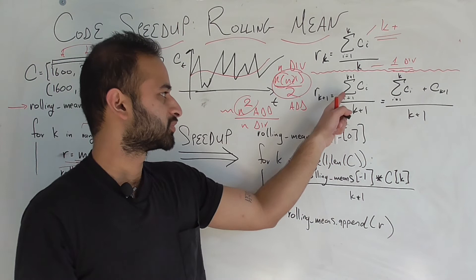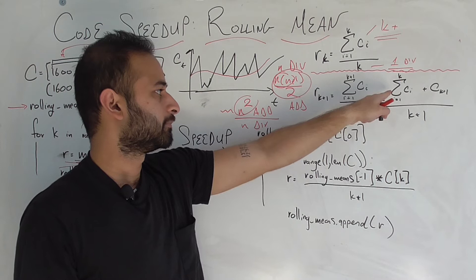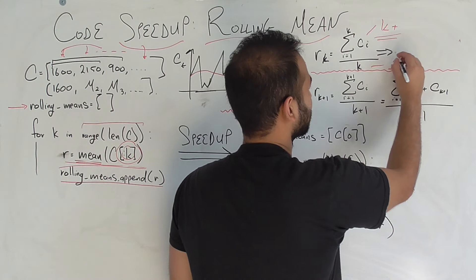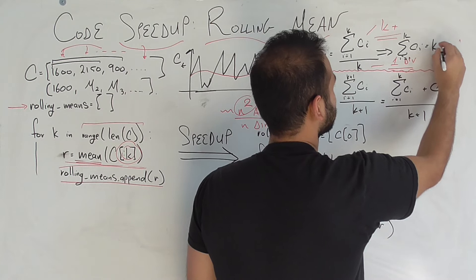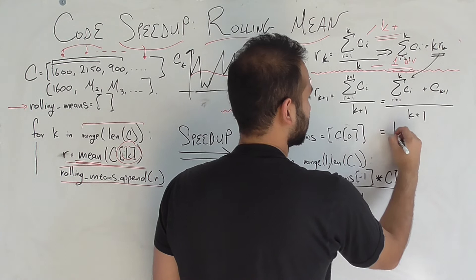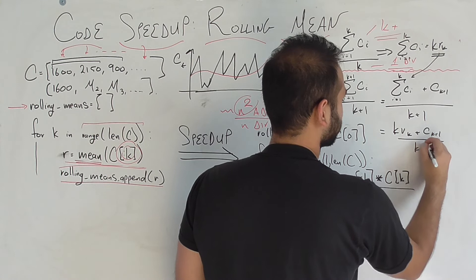What I did in the numerator here is I just split out this sum. I took the last element of that sum and put it by itself, and the rest of the elements are here. Now, this shows up right here, right? In fact, if I rewrote this guy a little bit, I would get that this sum of ci from i equals one to k is equal to k times rk. So I can just replace k rk right here, and I could get k rk plus c k plus one over k plus one.